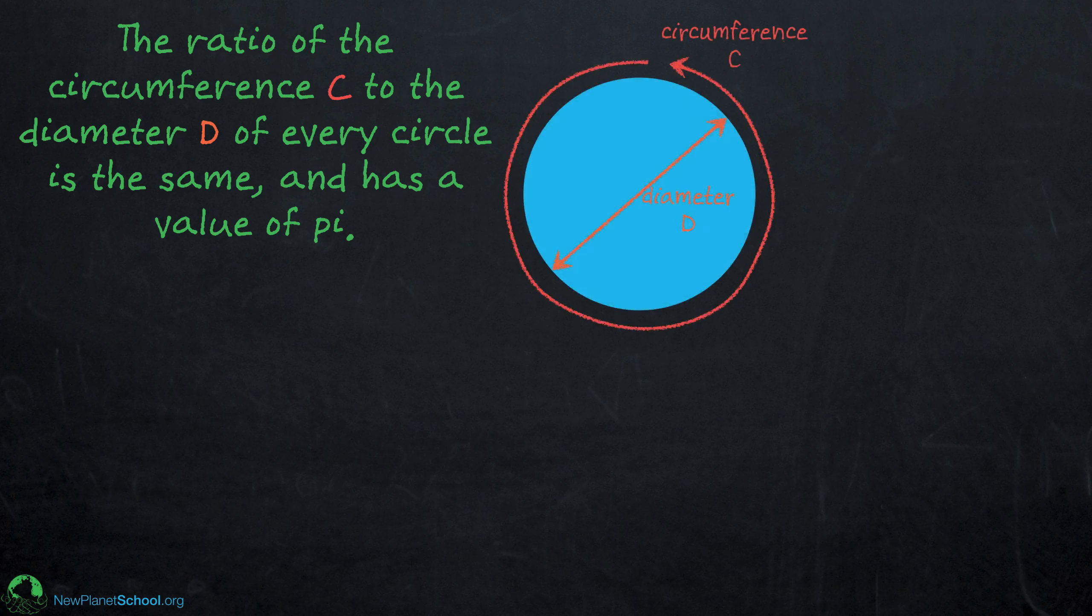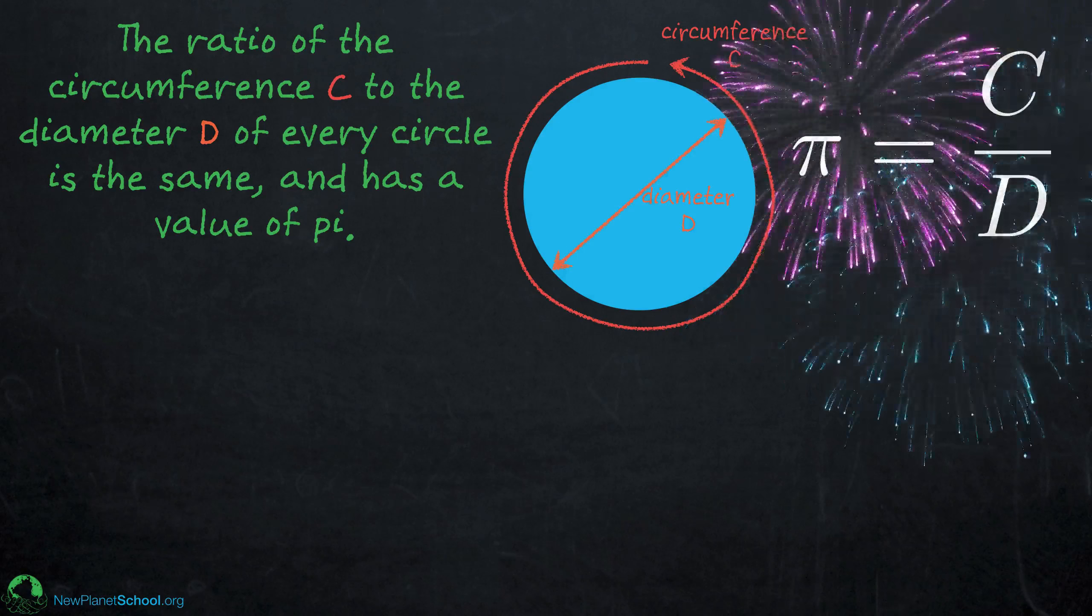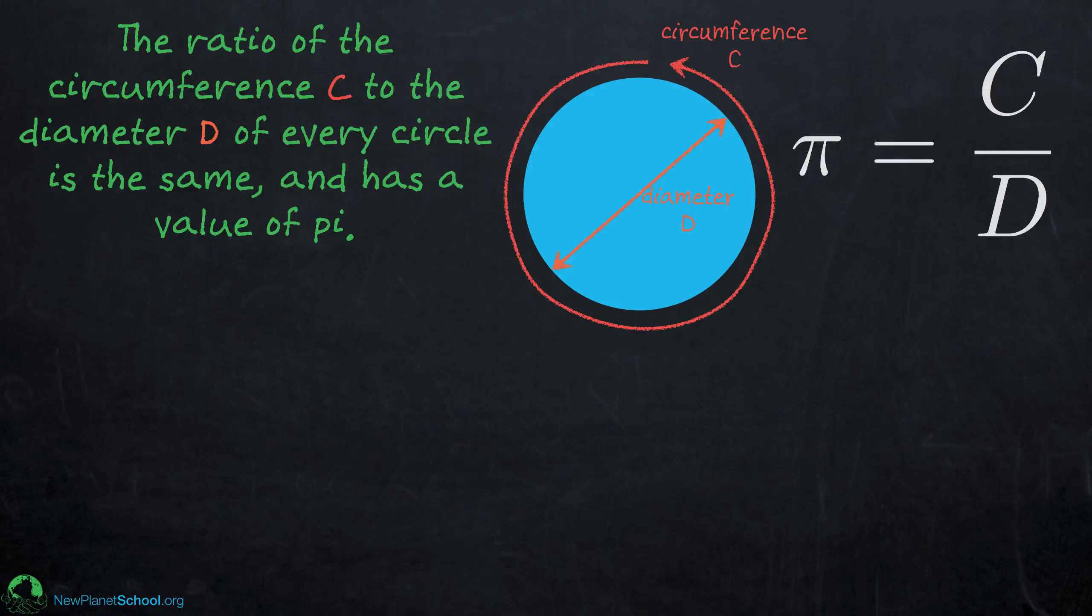As you know, the ratio of the circumference C to the diameter D of every circle is the same and has a value of pi. It's an amazing result that can be shown in an equation like this and it's true for every single circle. Pretty amazing.